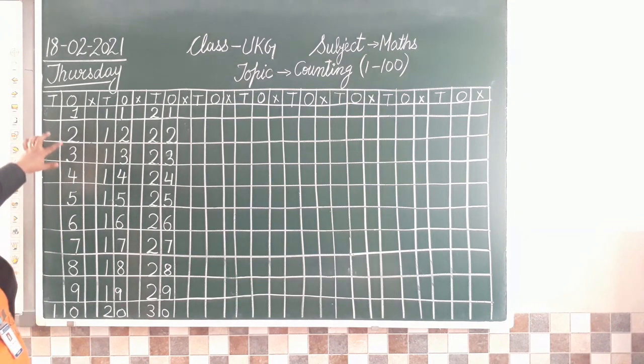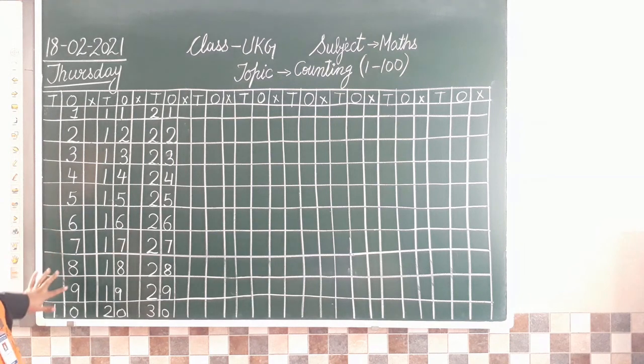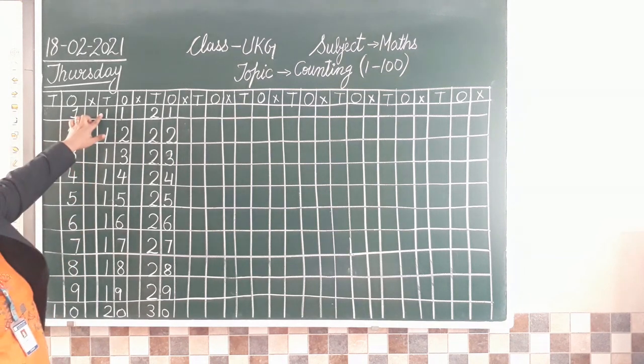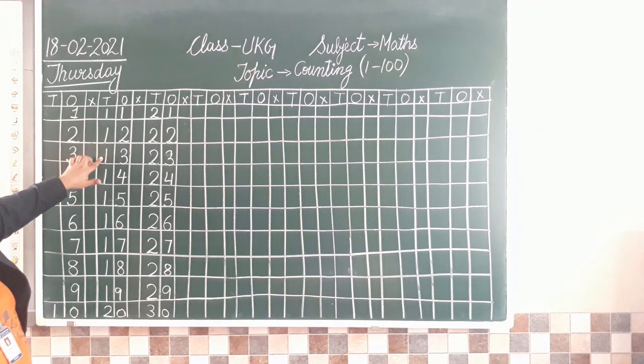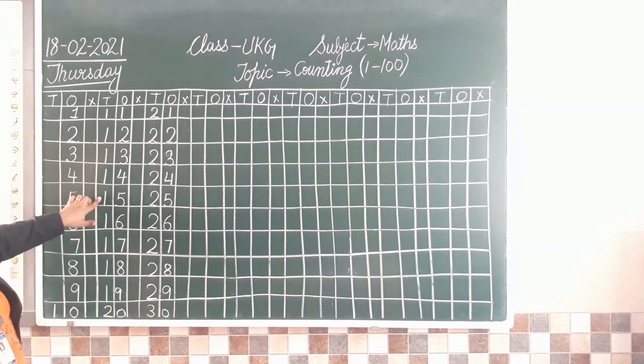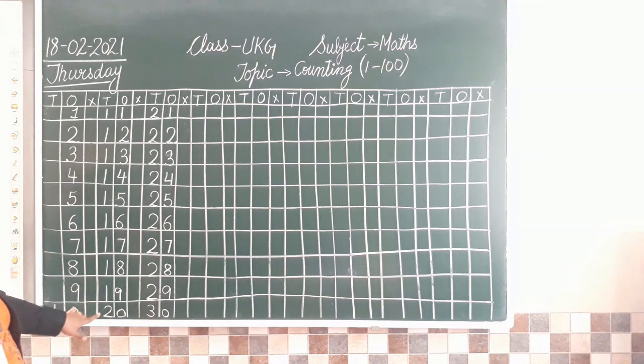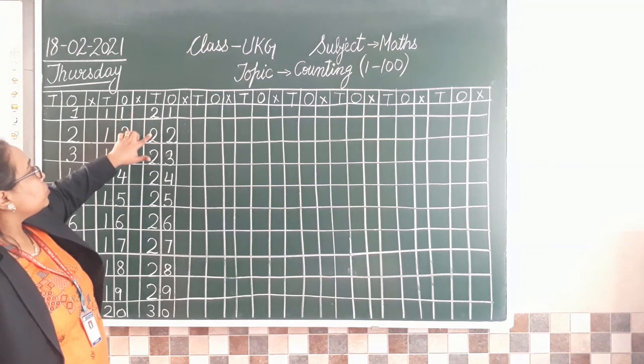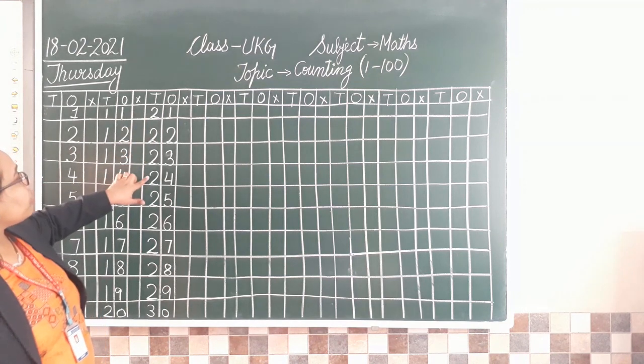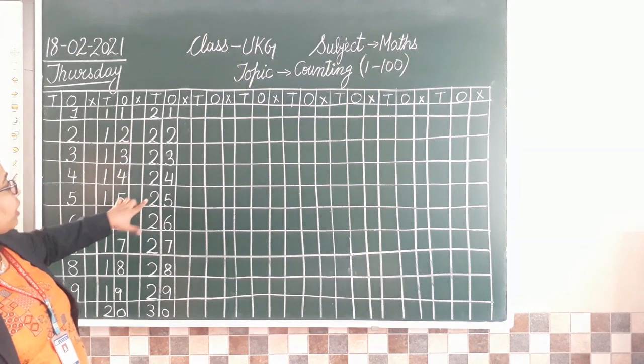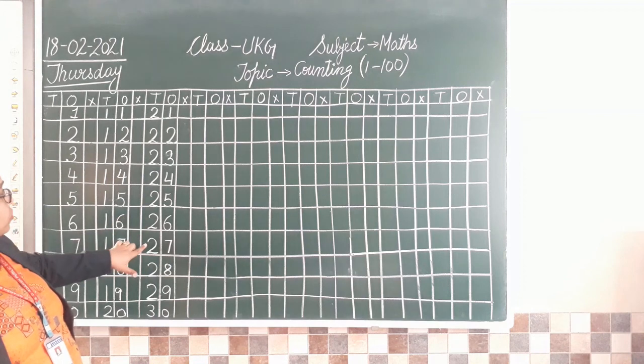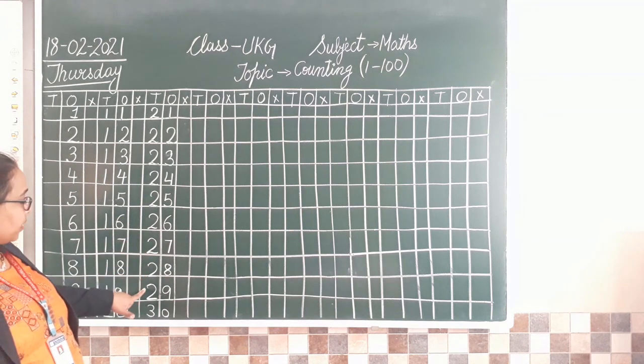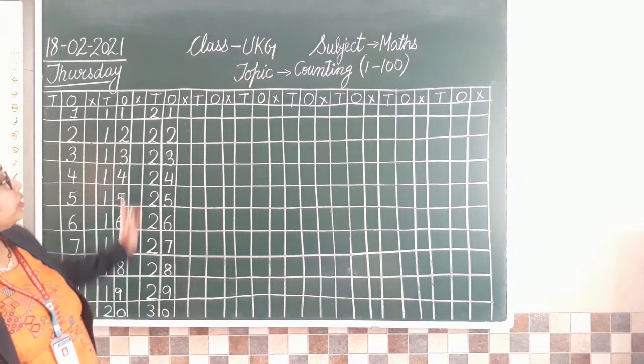See, when we speak and write, our oral practice will be over here. 1, 2, 3, 4, 5, 6, 7, 8, 9, 10. 11, 12, 13, 14, 15, 16, 17, 18, 19, 20. 21, 22, 23, 24, 25, 26, 27, 28, 29, 30.